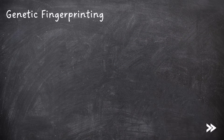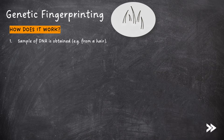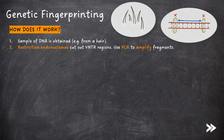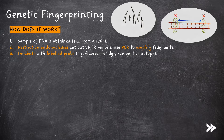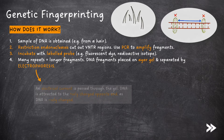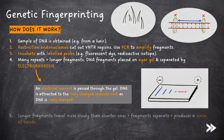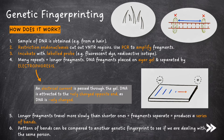Next, we need to know about genetic fingerprinting. How does genetic fingerprinting actually work? First of all, a sample of DNA is obtained, for example from cells obtained from a piece of hair. Restriction endonucleases then cut out VNTR regions. PCR is used to amplify fragments. Next, we incubate with a labelled probe — this could be a fluorescent labelled probe, which we can identify by observing the sample under UV light, or a radioactive isotope. If there are many repeats, we have longer fragments. DNA fragments are placed on agar gel and are separated by electrophoresis. Electrophoresis is when an electrical current is passed through the gel. DNA is attracted to the opposite end of the plate, which is positively charged, as DNA is negatively charged and opposite charges attract. Longer fragments travel more slowly than shorter ones, meaning that fragments separate, which produces a series of bands. This pattern of bands can be compared to another genetic fingerprint to see if we are dealing with the same person.